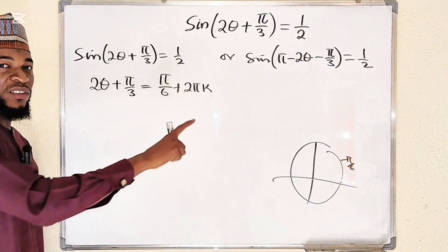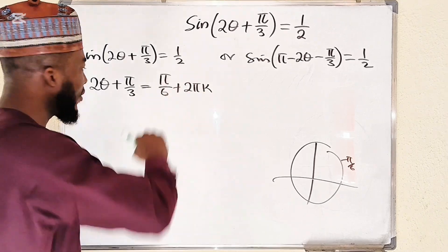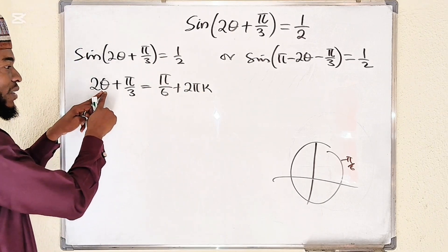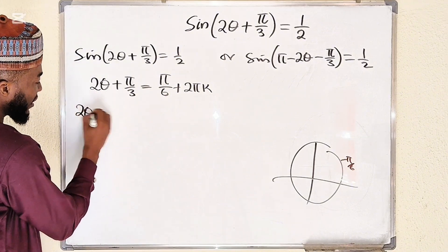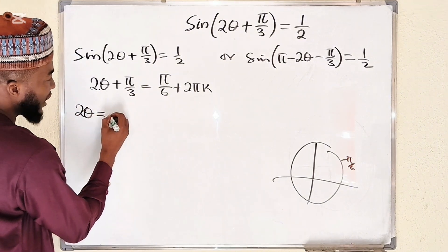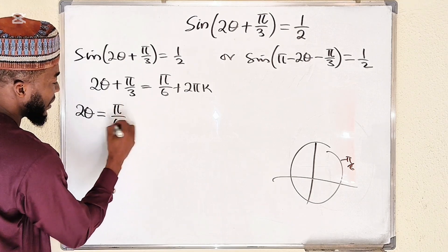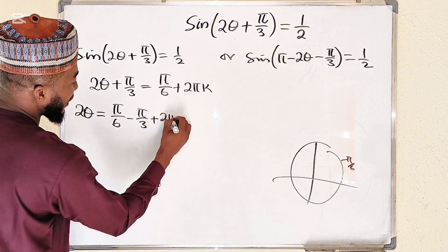So you just add multiples of 2 pi, for which this case is just an integer 0, 1, 2, negative 1. Now our main goal is to find theta. First let's take this one to the other side. We have 2 theta equal to minus pi divided by 3 plus 2 pi k.